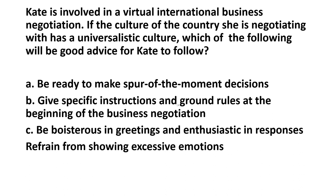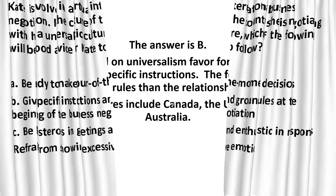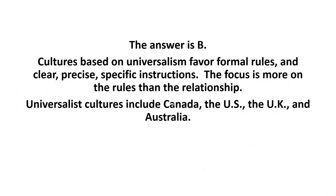Kate is involved in a virtual international business negotiation. If the culture of the country she is negotiating with has a universalistic culture, which of the following will be good advice for Kate to follow? A. Be ready to make spur-of-the-moment decisions. B. Give specific instructions and ground rules at the beginning of the business negotiation. C. Be boisterous in greetings and enthusiastic in responses. D. Refrain from showing excessive emotions. The answer is B. Cultures based on universalism favor formal rules and clear, precise, specific instructions. The focus is more on the rules than the relationship. Universalist cultures include Canada, the US, the UK, and Australia.